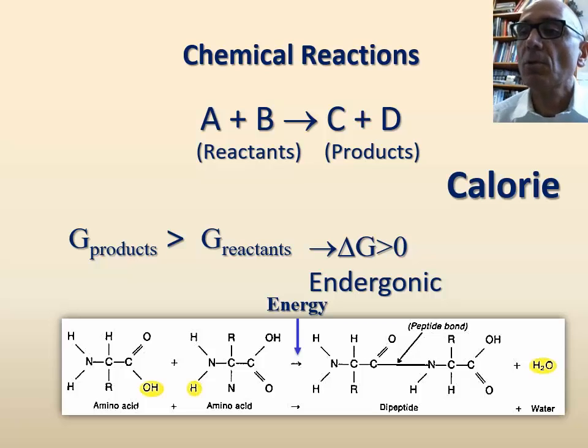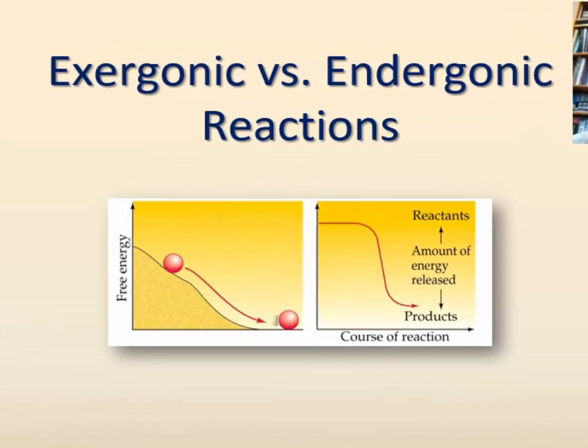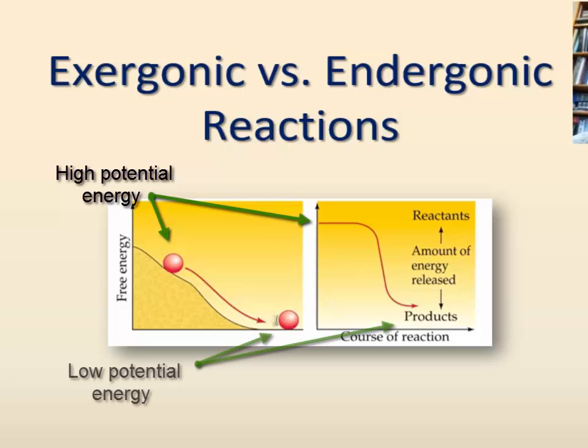In biology, it is common to use calorie as the unit of energy in chemical transformations. Exergonic reactions are analogous to a ball rolling downhill. The ball rolls spontaneously, and at the top of the hill, the potential energy of the ball is higher than its energy at the bottom level.